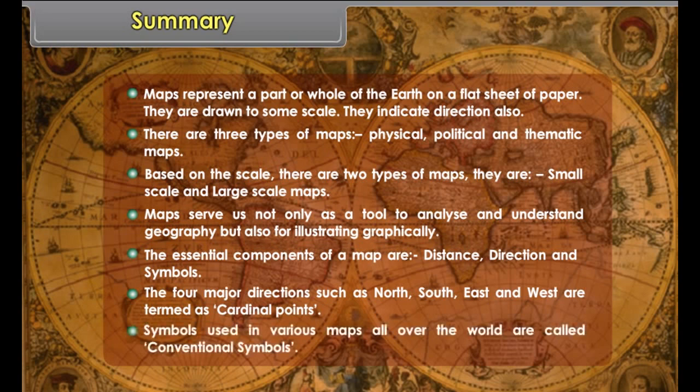The essential components of a map are distance, direction, and symbols. The four major directions such as north, south, east, and west are termed as cardinal points. Symbols used in various maps all over the world are called conventional symbols.